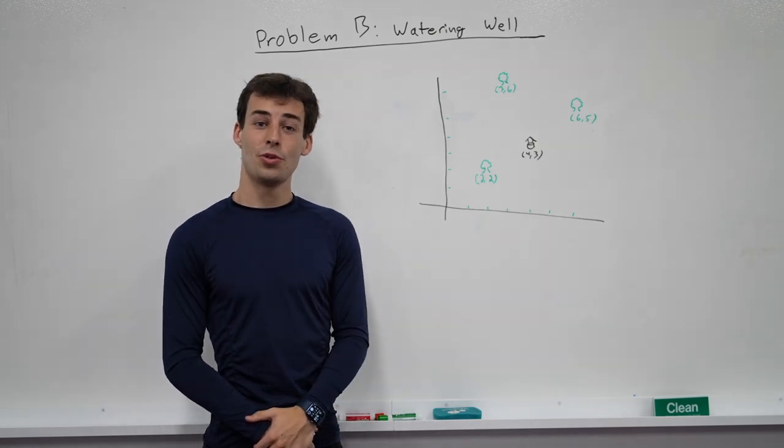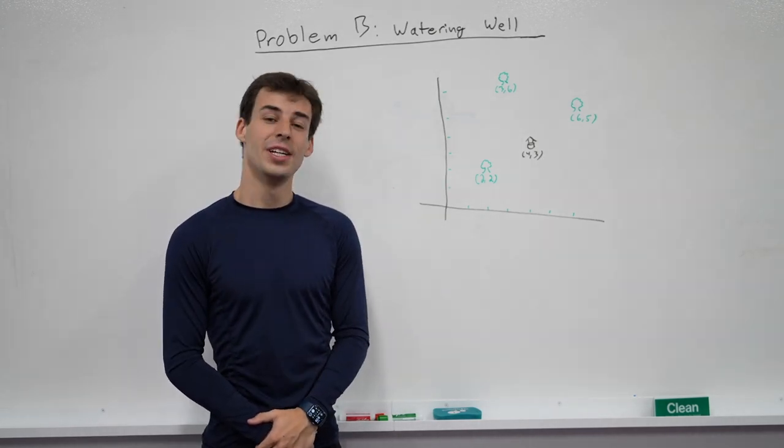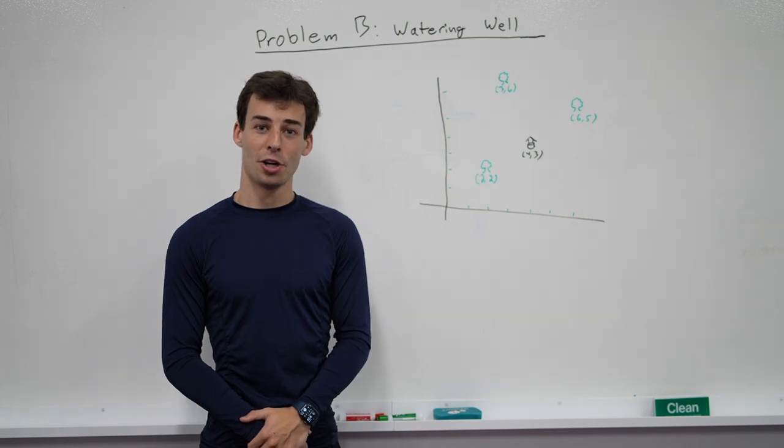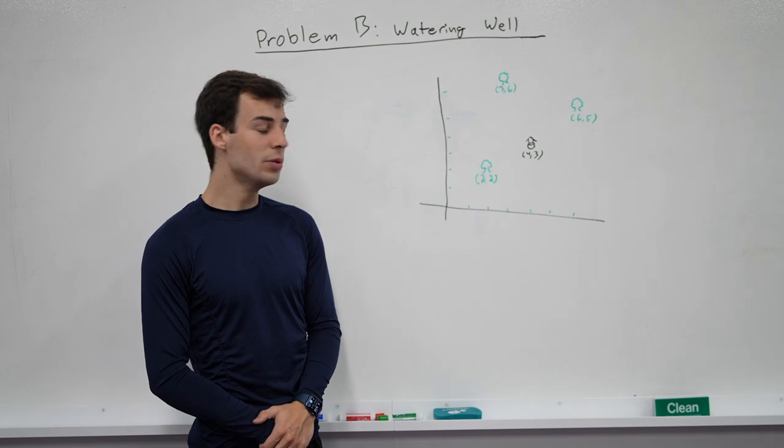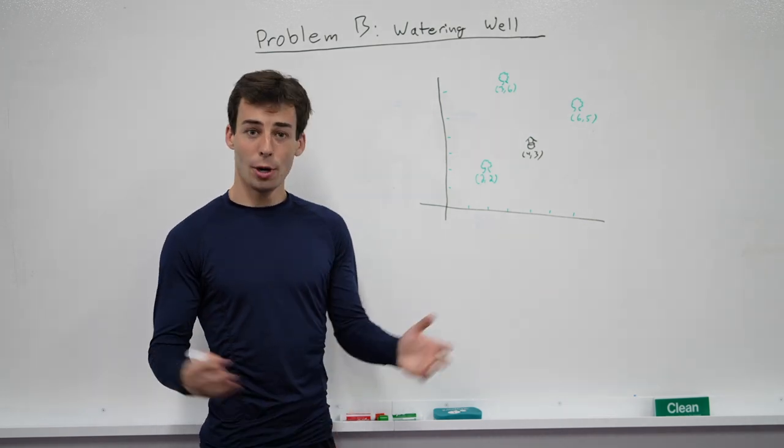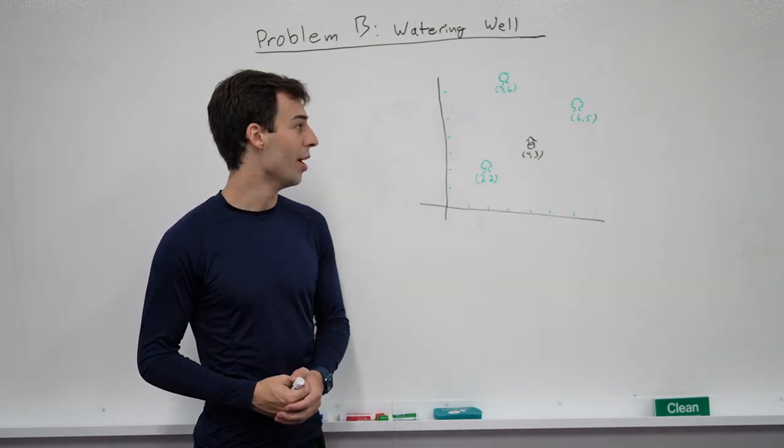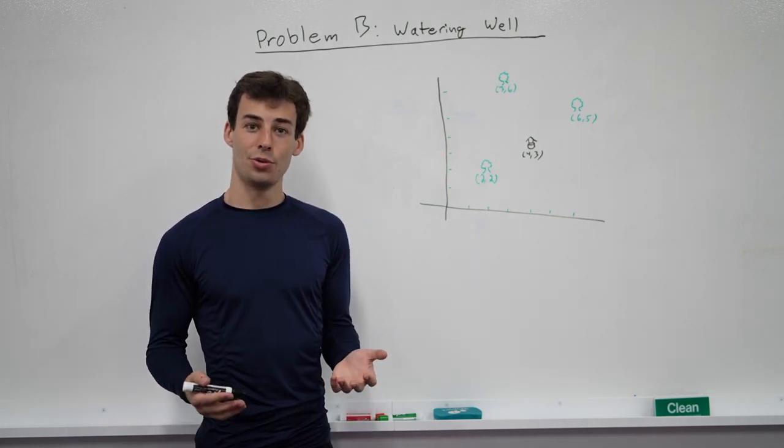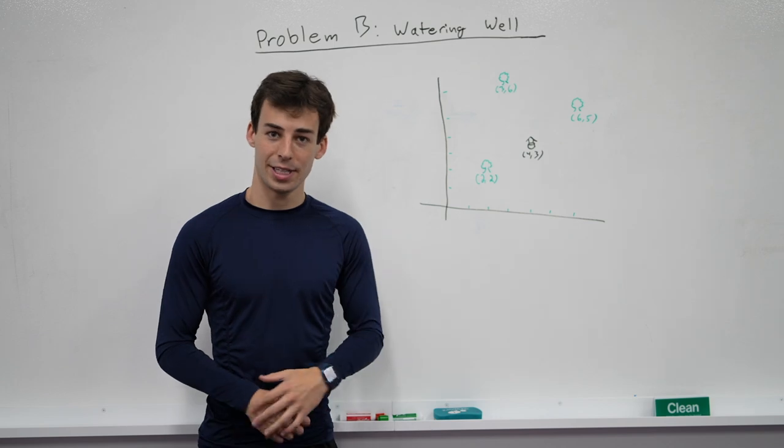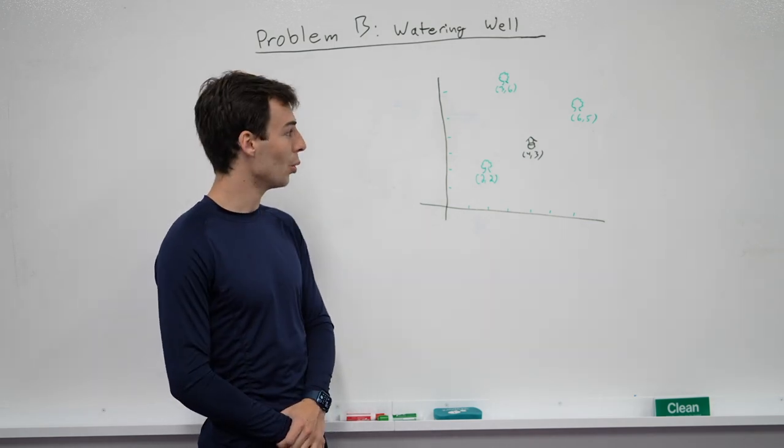Good morning and welcome to the solution video to problems B1 and B2 of the 2022 MetaHacker Cup. These problems are watering well and watering well chapter 2, and they involve Boss Rob, back from the qualification round, who's planted n happy little trees and now wants to find a location to build his watering well.